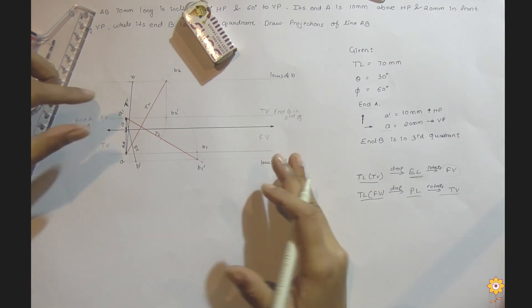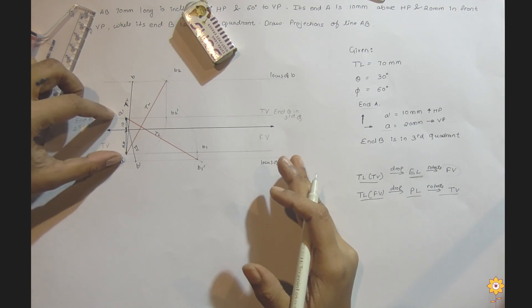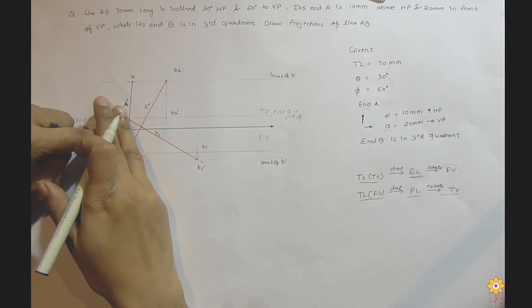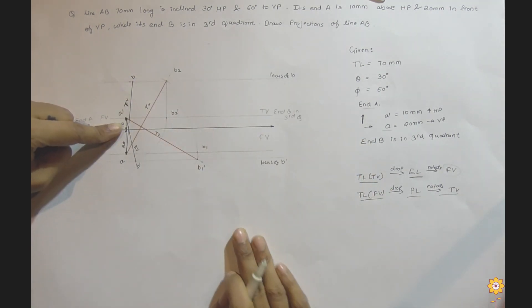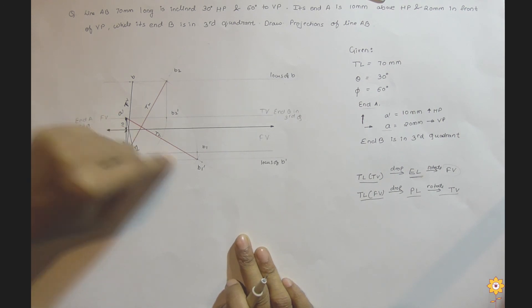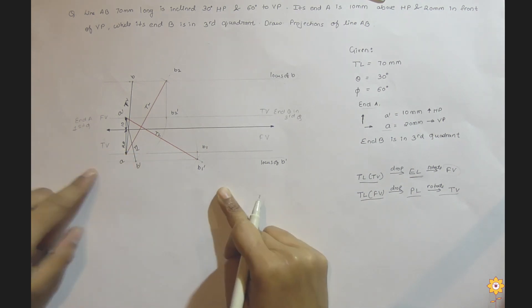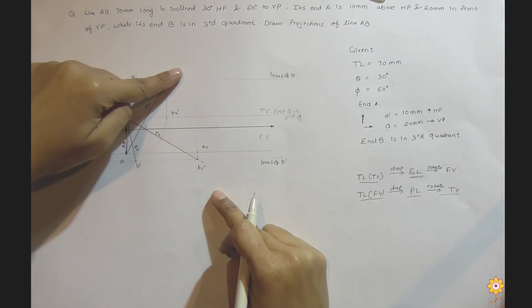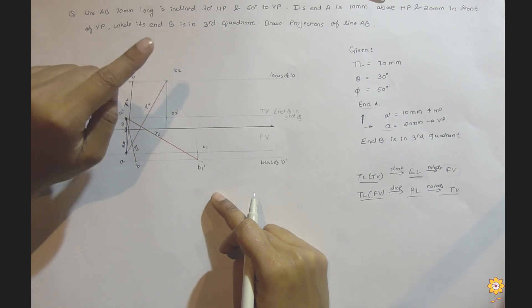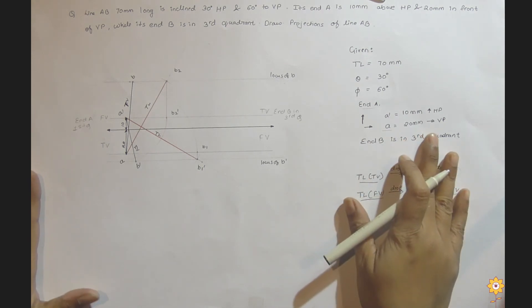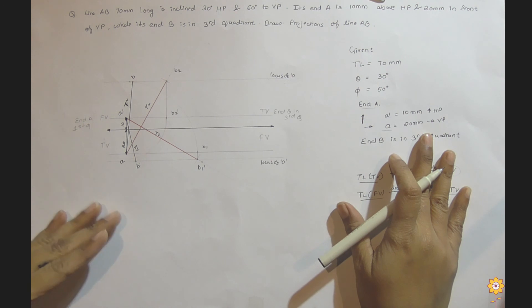This is how we solve the question when one of the points is travelling towards the third quadrant from the first quadrant. Thank you, hope you understood.